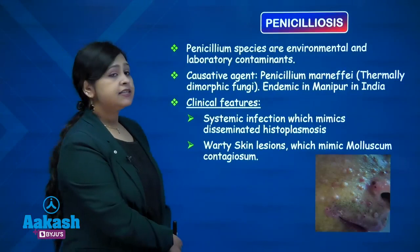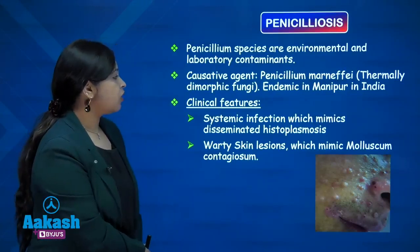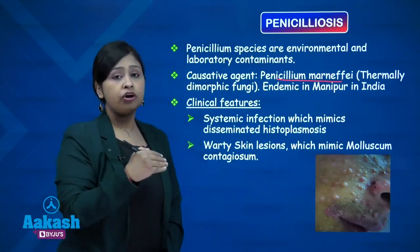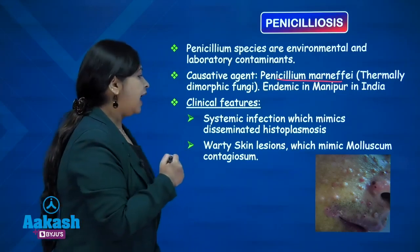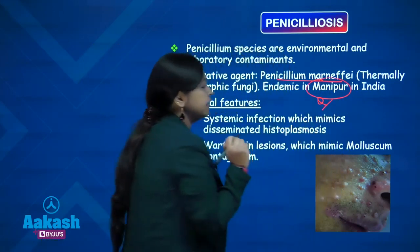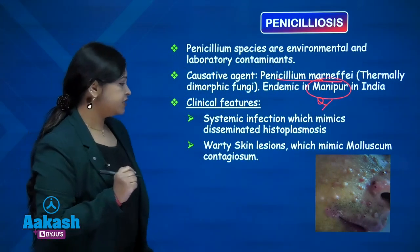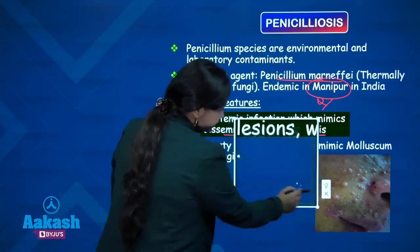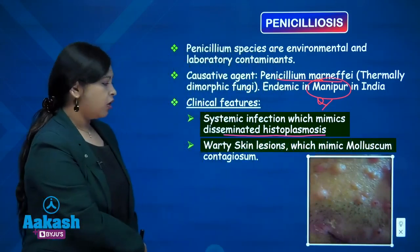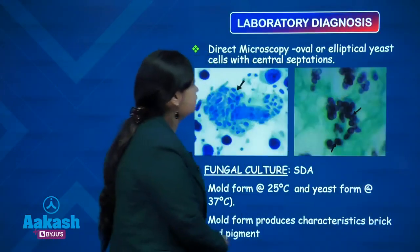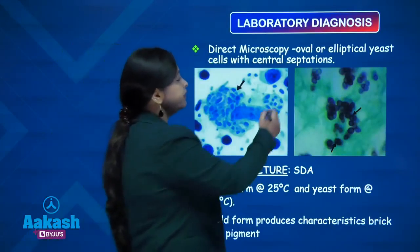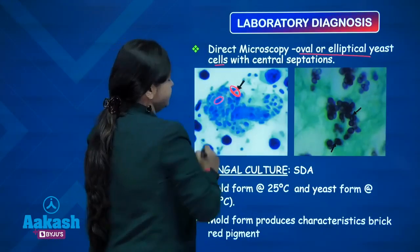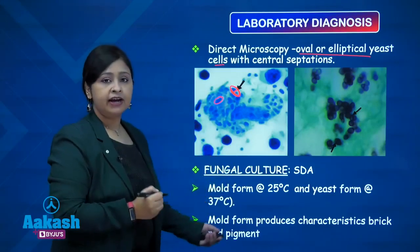Next is penicillosis. The causative agent is Penicillium marneffei, a thermally dimorphic fungi — yeast form at 37°C and mold form in the environment — endemic in Manipur. Systemic infection mimics histoplasmosis with umbilicated skin lesions resembling molluscum contagiosum. Direct microscopy shows oval elliptical yeast cells with central septations. Fungal culture on SDA shows mold growth at 25°C and yeast at 37°C.